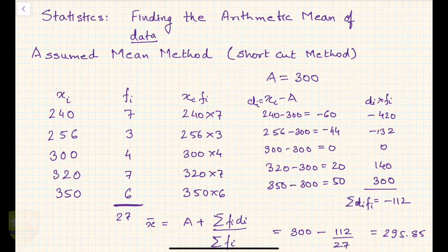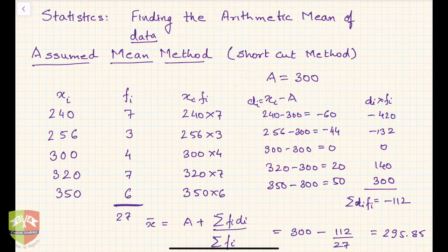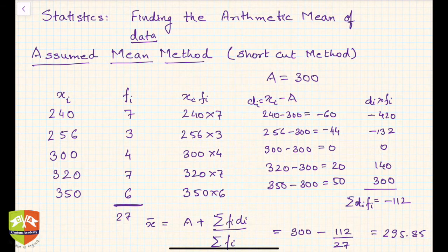Hello friends, welcome to this session on statistics. After having studied the direct method, we are going to find out the arithmetic mean of given data — whether it is in the form of discrete data or class interval form — using something called the assumed mean method. In earlier days, when we didn't have calculators and computers, and variable values were quite large, it became very difficult and cumbersome to do calculations. So statisticians and mathematicians came up with a technique of reducing the calculation load: the assumed mean method.